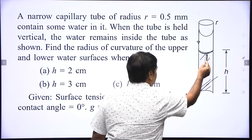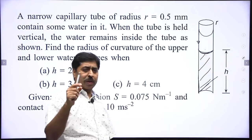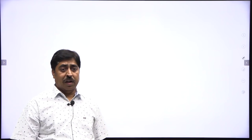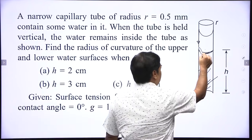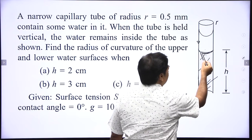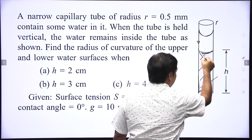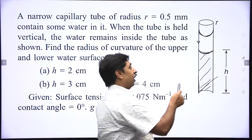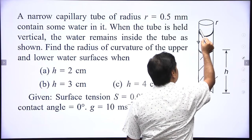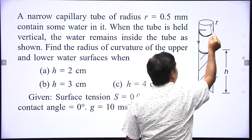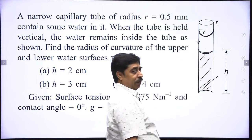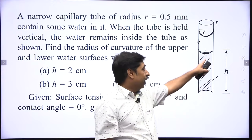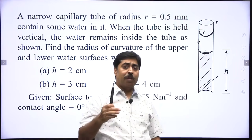We will first calculate the pressure at the point just below the upper curved surface. The pressure above is atmospheric pressure P₀. The contact angle is 0 degrees, so the upper meniscus is hemispherical, meaning the radius of curvature equals the tube radius. Therefore, the pressure just below the upper meniscus is P₀ minus 2s/r. Substituting the data for s and r gives atmospheric pressure minus 300 N/m².